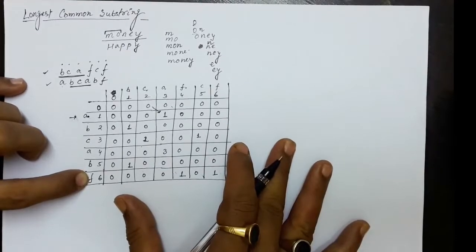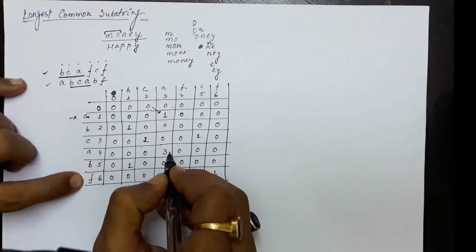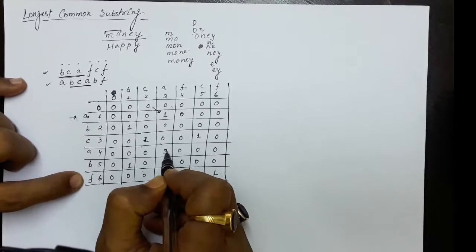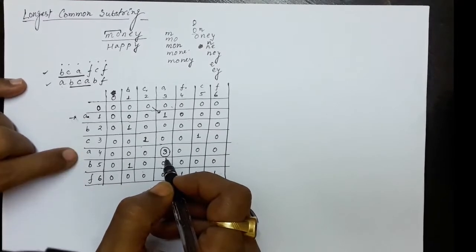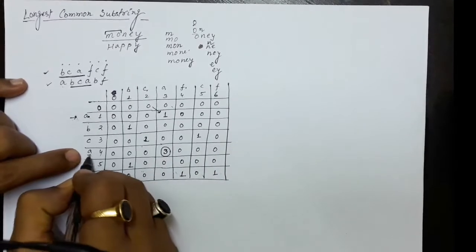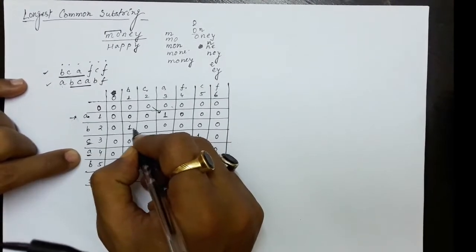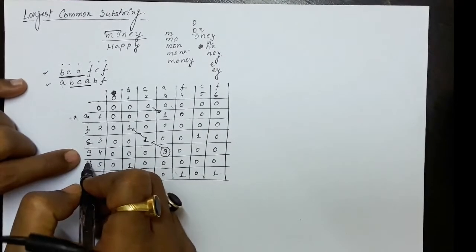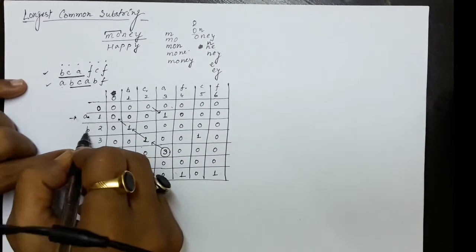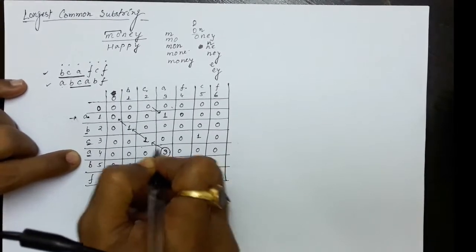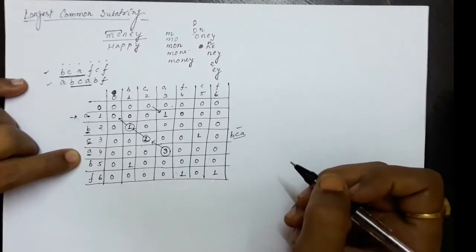So this is the table that we have constructed. After constructing this table, you refer to the largest entry in the table — that tells you the length of the largest substring. The maximum value here is 3. To find what the common string is, you trace back from the largest value. Since you went from 0 to 1 to 2 to 3 at each match, the characters are B, C, A. So B, C, A is the longest common substring.